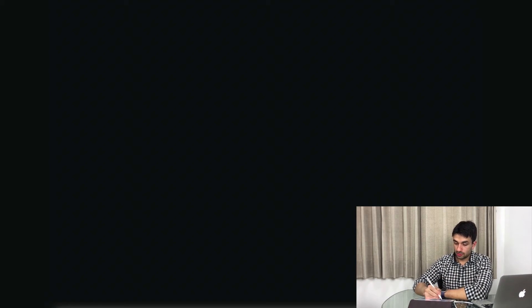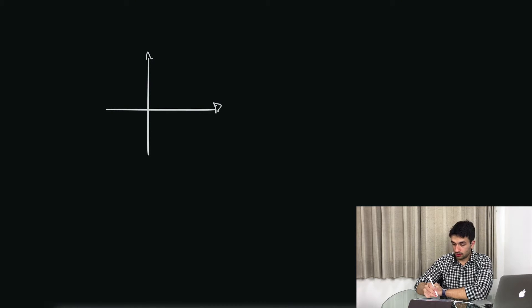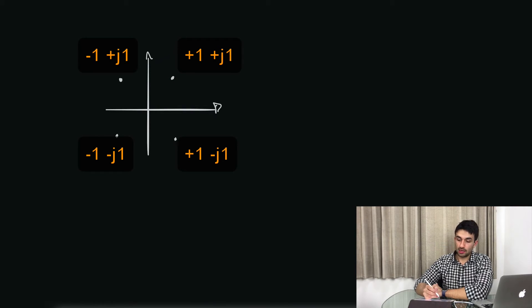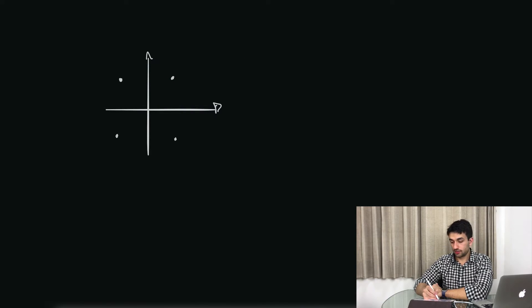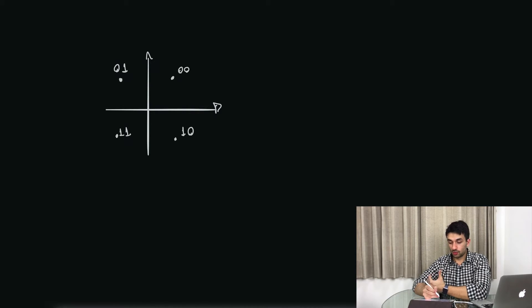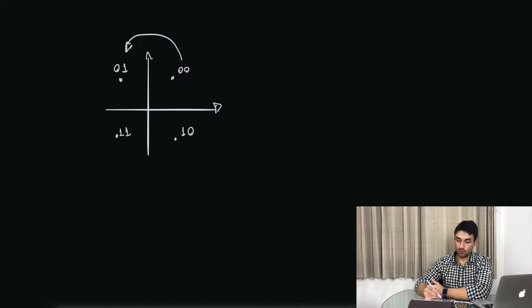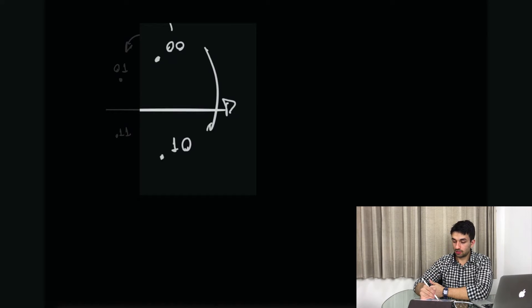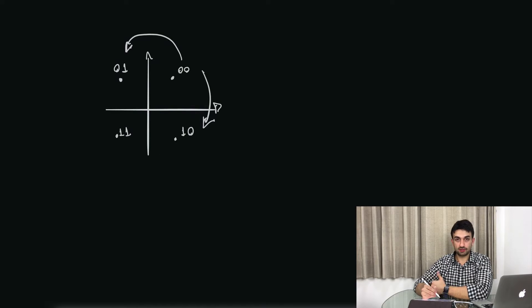We want to use a fixed-point number for the output symbol, but we need to design this fixed-point number so that we do not lose part of the symbol due to the precision of the number. Our constellation is going to have four points and we're going to use gray coding. So we're going to map 00 here, then 01, 10, and 11. We do that because we want to have a single bit change from one symbol to the adjacent one.